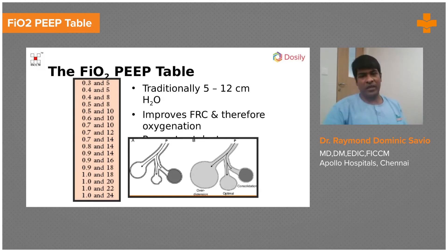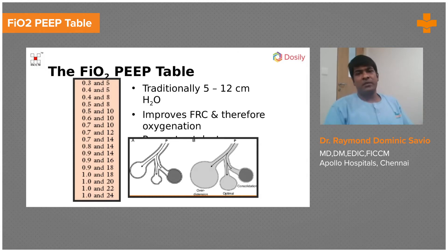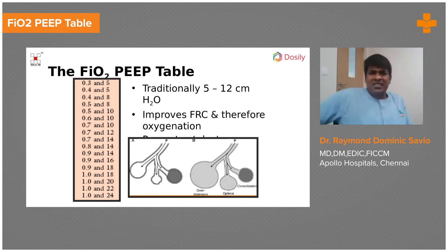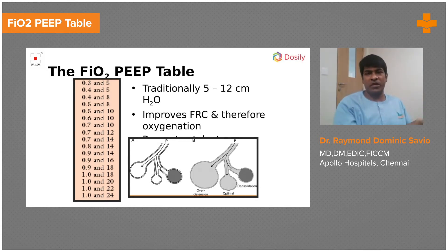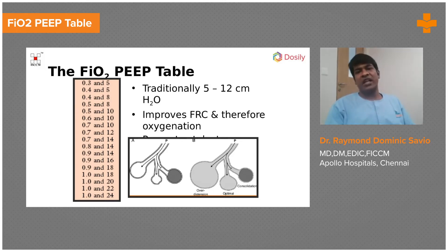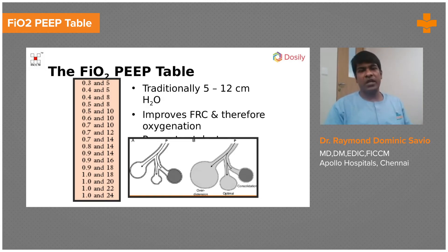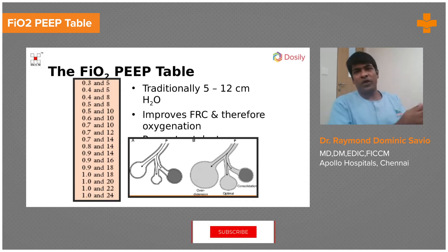On the left side there is the PEEP/FiO2 table as proposed by the ARDS Network. This is an arbitrary nomogram: you increase FiO2 a couple of times and observe for change; if nothing happens, increase PEEP a couple of times; if nothing happens, go back to FiO2 — a zigzag approach. This is what has been used in most trials. For beginners and those in resource-limited settings, just look up the ARDS Network table and follow it: for a given FiO2, pick the suggested PEEP.